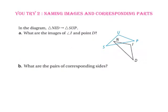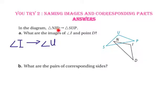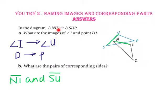Pause the video and do you try number 2. In the diagram, triangle NID maps onto triangle SUP. Part A asks: what are the images of angle I and point D? Since angle I and angle U are in corresponding positions, angle I maps onto angle U. Since point D and point P are in corresponding positions, point D maps onto point P. Part B asks: what are the pairs of corresponding sides? I prefer to use the names of the triangles to help me, since they are already listed in corresponding order. Side NI corresponds to side SU, side ID corresponds to side UP, and side DN corresponds to side PS.